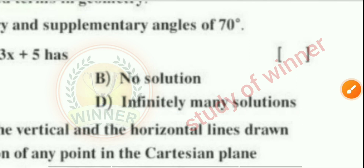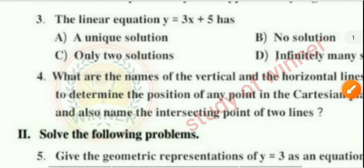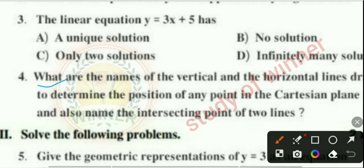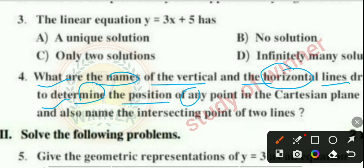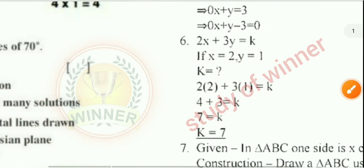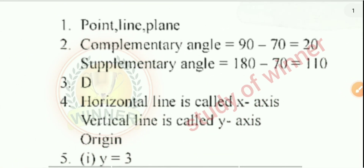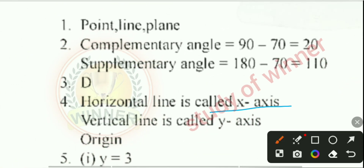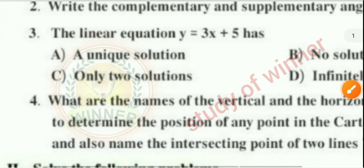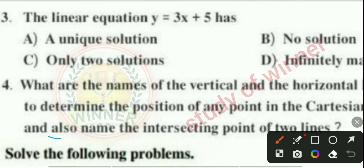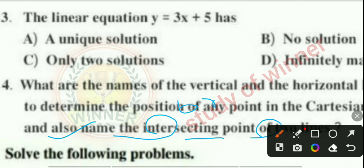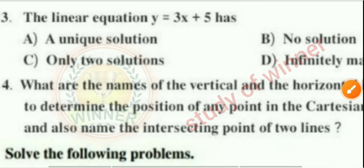Question 4: What are the names of the vertical and horizontal lines drawn to determine the position of any point? Answer: The horizontal line is called the x-axis and the vertical line is called the y-axis. The intersecting point of the two lines is called the origin.